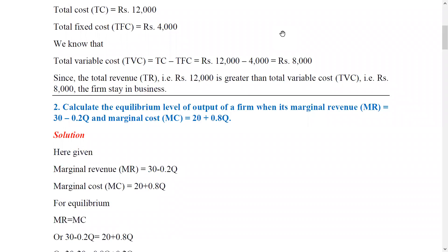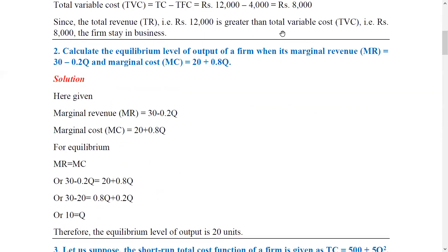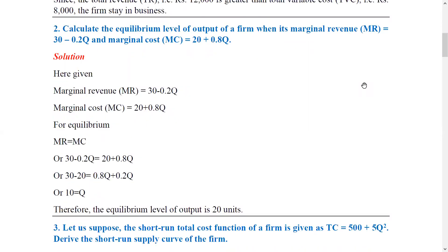The next question: calculate the equilibrium level of output of a firm when its marginal revenue is MR = 30 - 0.2Q and marginal cost equals MC = 20 + 0.8Q. The profit-maximizing level of output is called the firm's equilibrium, using the MR = MC approach. Setting MR equal to MC: 30 - 0.2Q = 20 + 0.8Q, and solving gives the equilibrium level of output as 10 units.